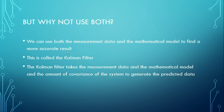That has been done, and it's called a Kalman filter. A Kalman filter takes the measurement data from the foreground detector and the mathematical model, takes into account the covariance of the system, and generates the predicted data.